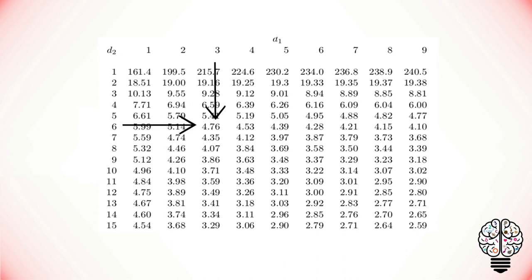To calculate the F critical value for the column, we take the degrees of freedom for the column and the residual, which are 3 and 6. This gives us a critical value of 4.76.